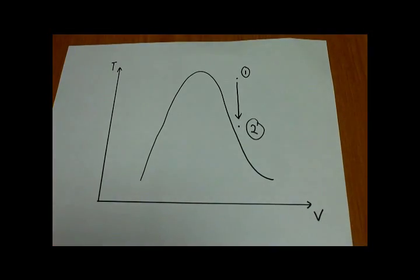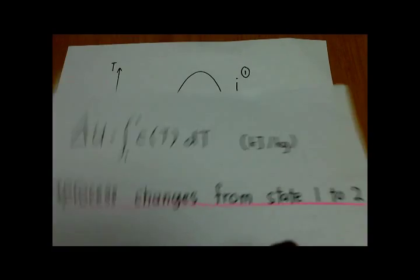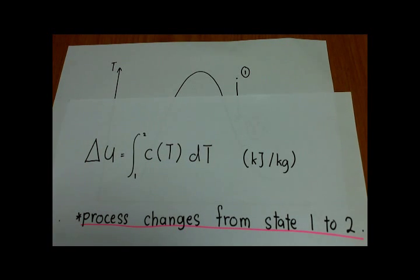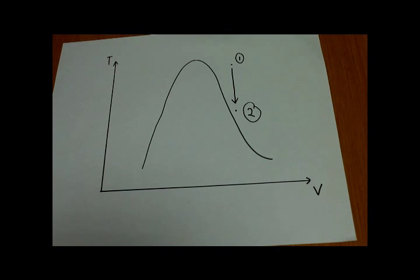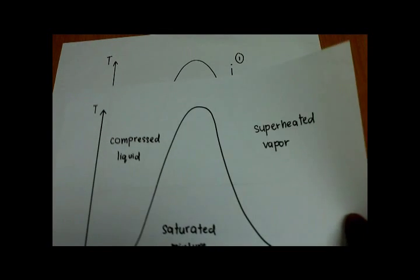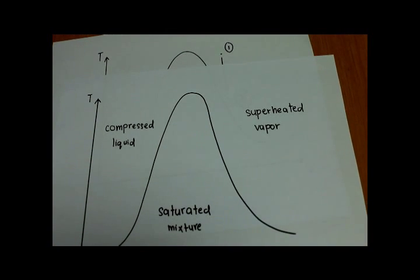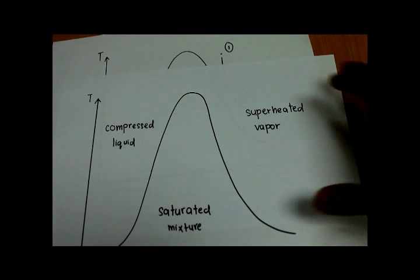Let us look at the graph. It shows changes from state 1 to state 2. We use the formula delta u equal to the integration of C in terms of T, dT. The process changes from state 1 to state 2. Note that the changes of state is different from the changes of phase. The changes of phase is like compressed liquid to saturated mixture.